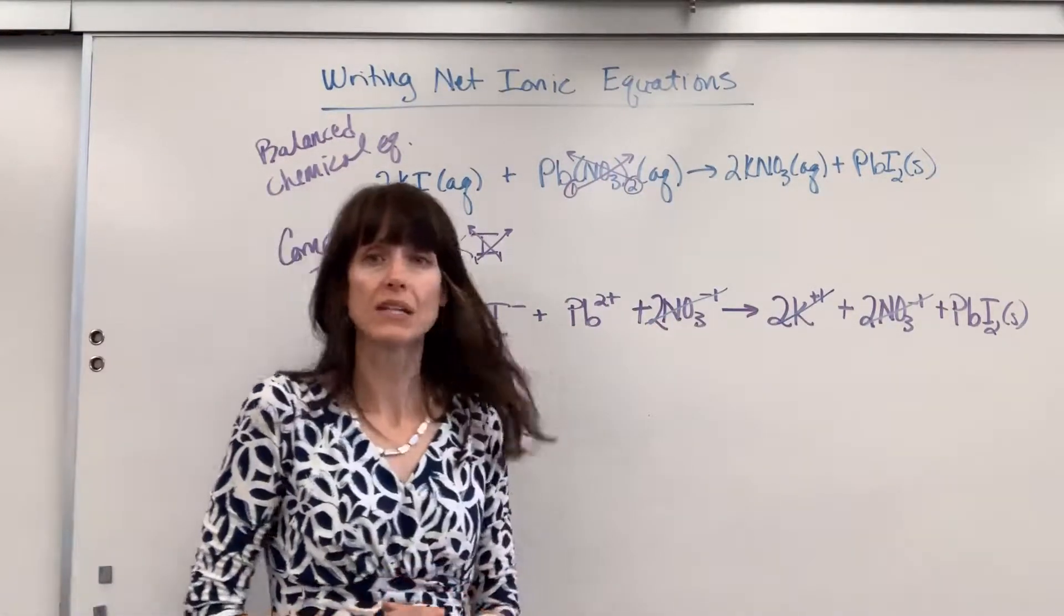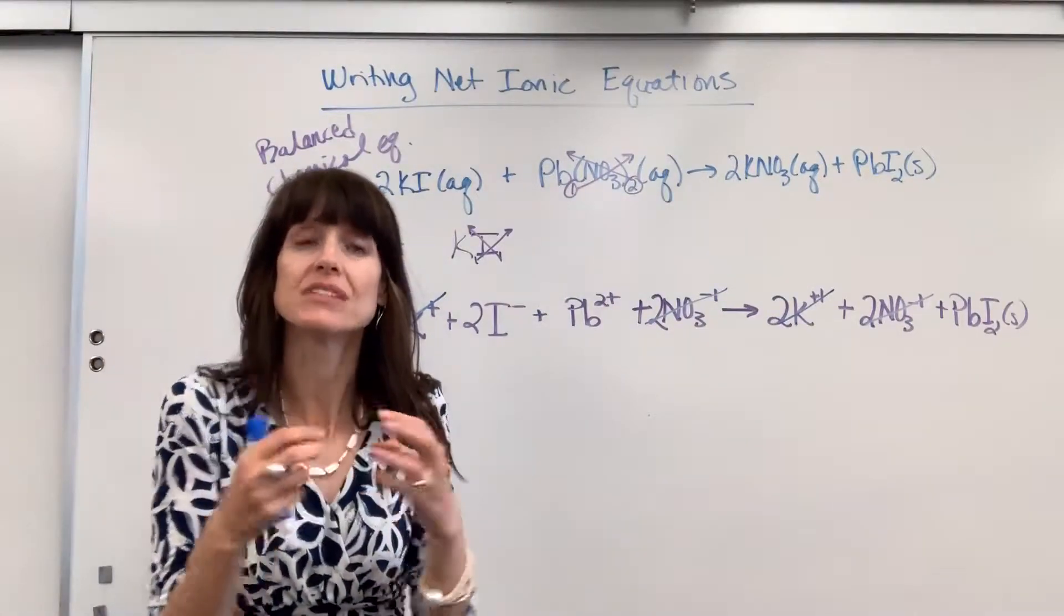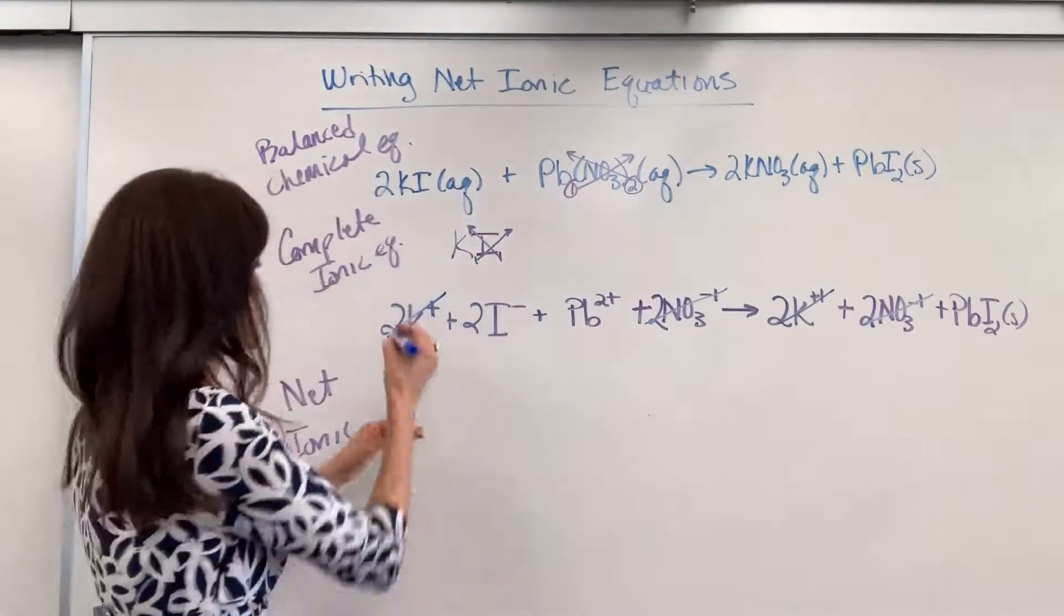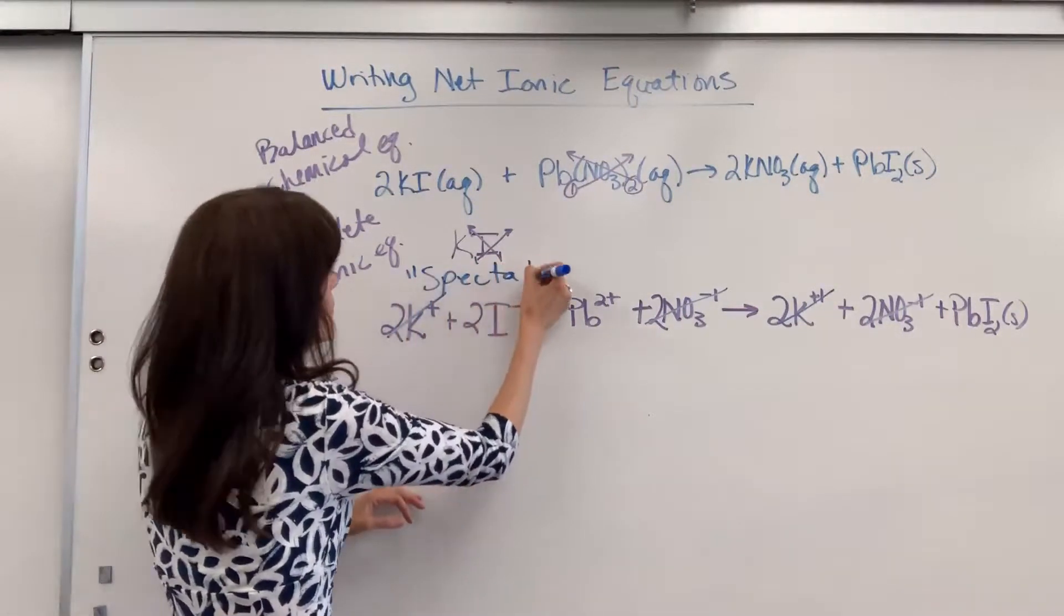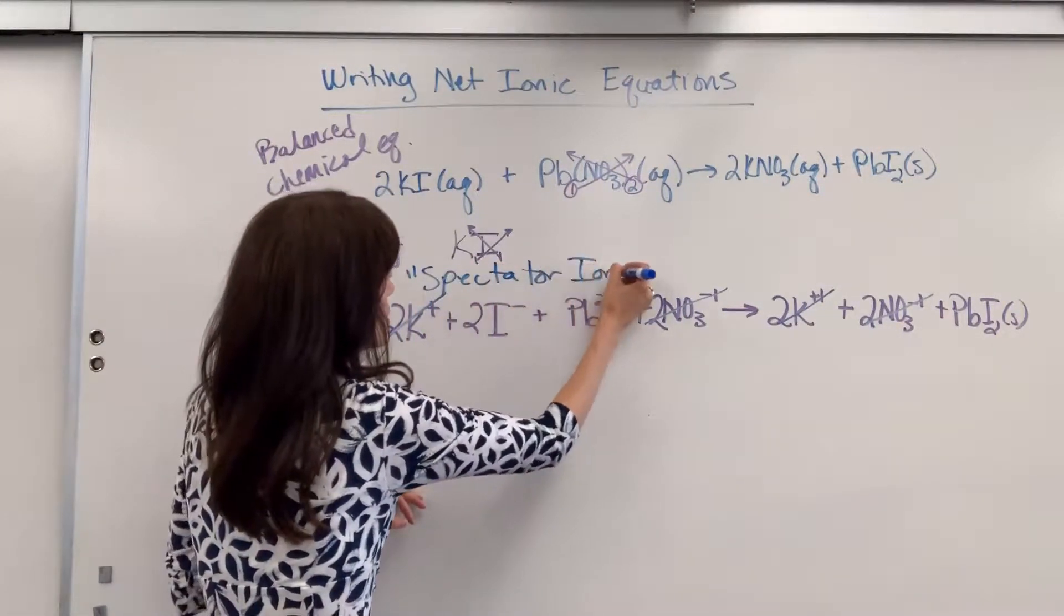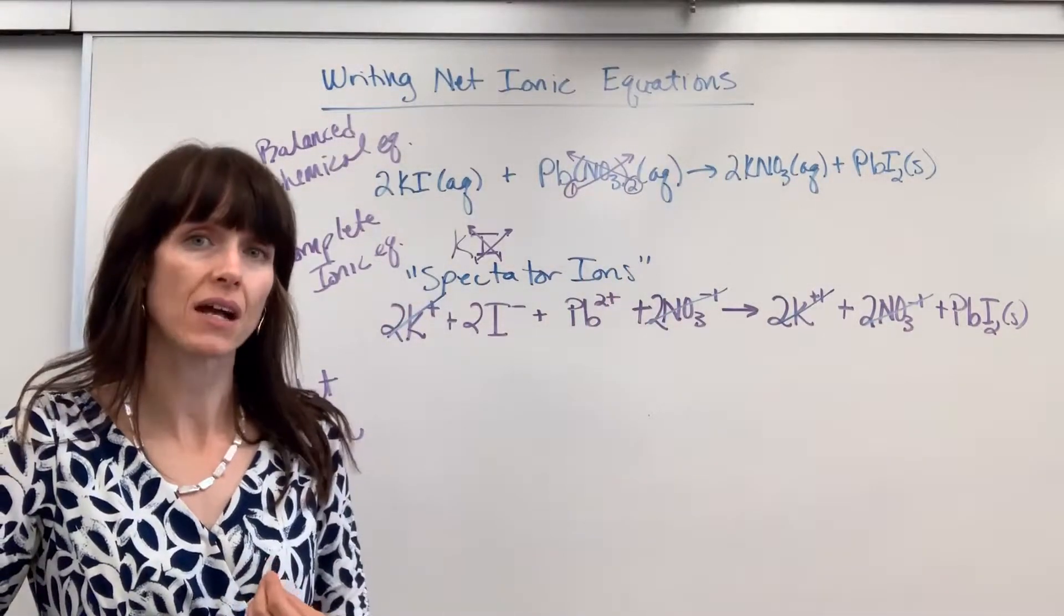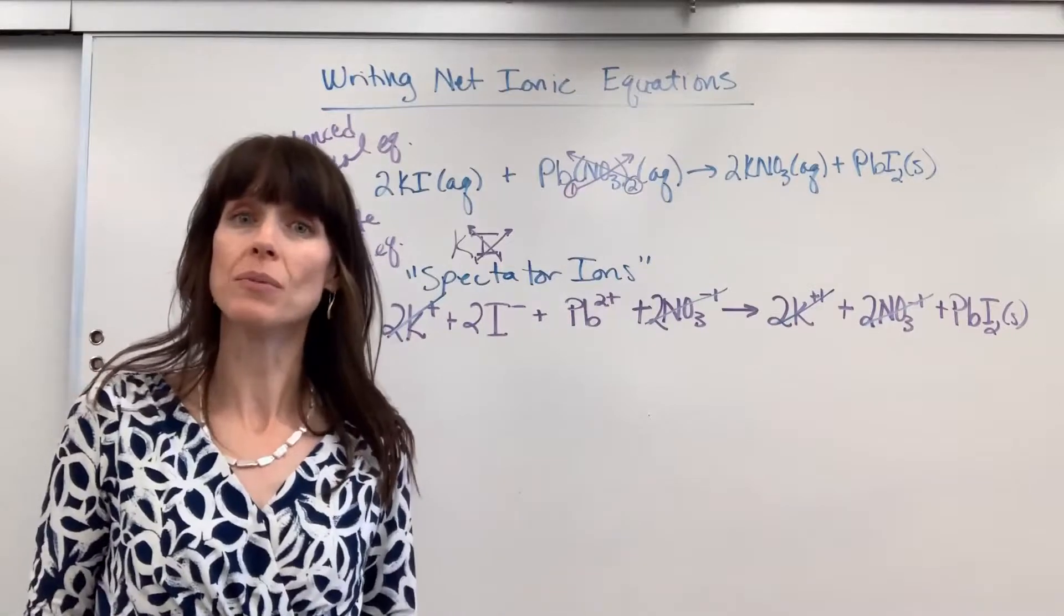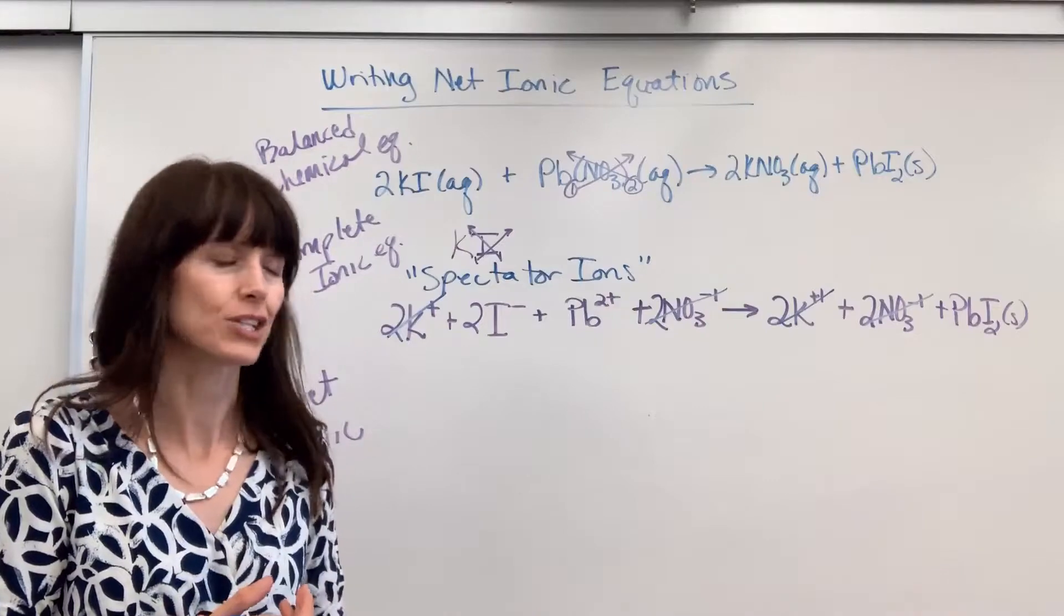Well, the potassium ion and the nitrate ion, they just watch. They're not actually involved in the chemical reaction. So those are called spectator ions. And you want to cancel those out. When we write the net ionic equation, we don't include them because they're not actually doing chemistry in that chemical reaction.